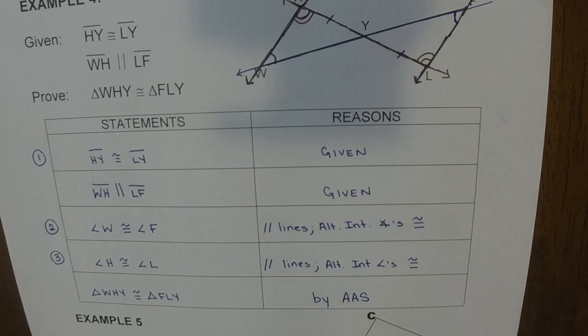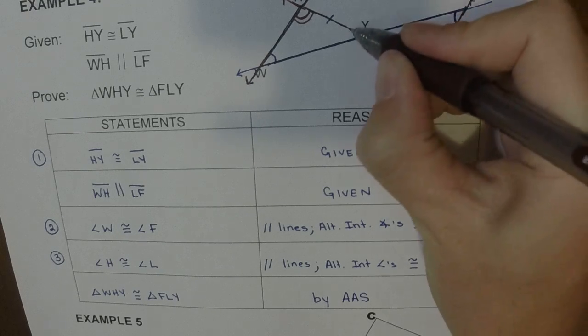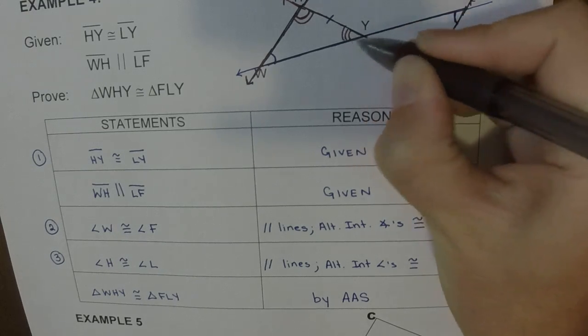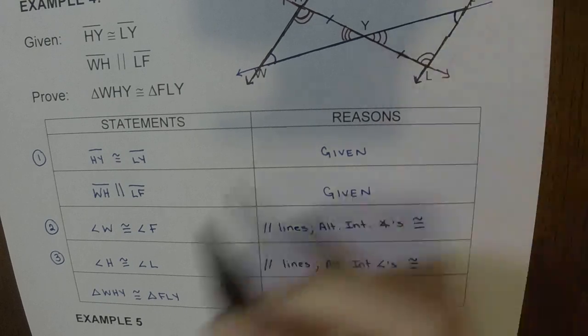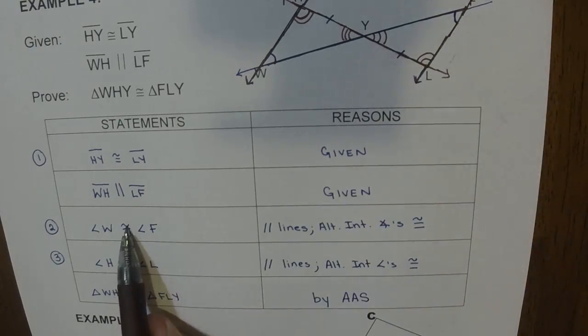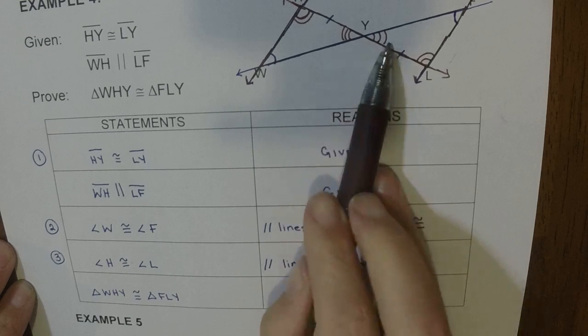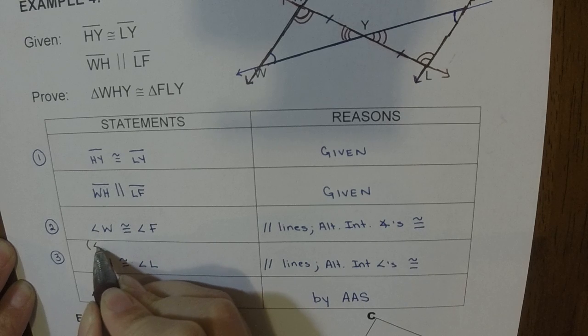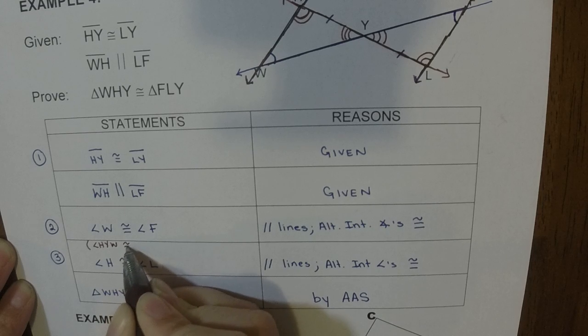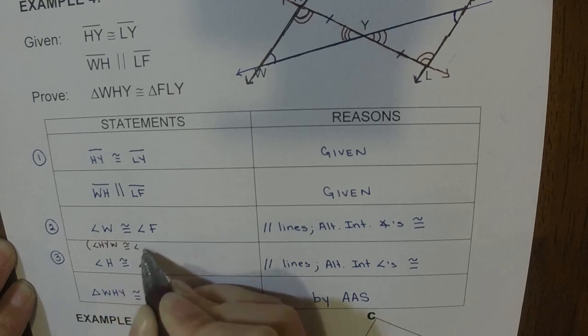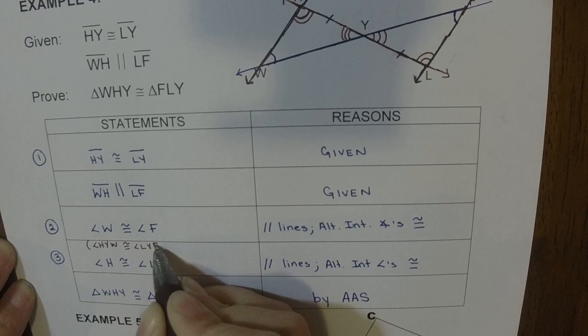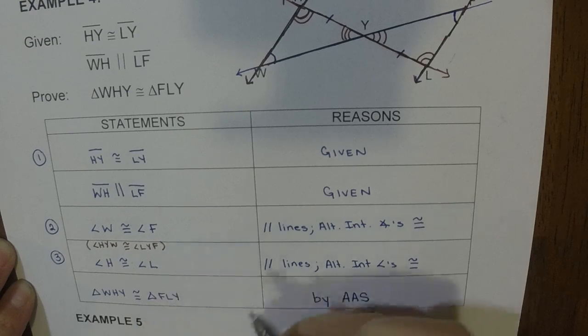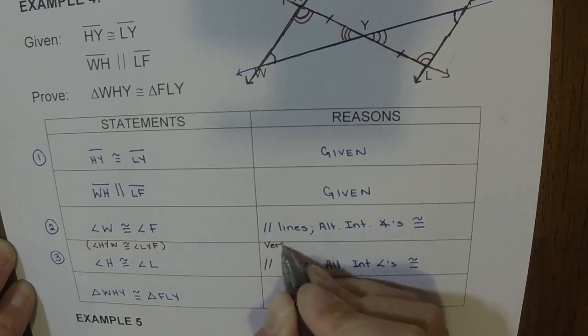Now, if we didn't notice both of those sets of parallel lines, I do want you to realize that I could have also used this angle with this angle. So I could have changed either one of these to use these vertical angles. So I could have said, and again, this is not required, but I could have said angle HYW is congruent to angle LYF. And then over here, I would have said vertical angles congruent.